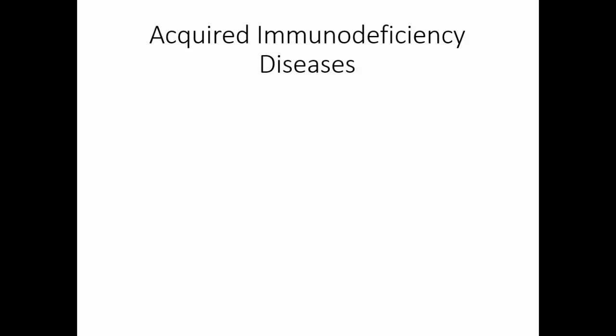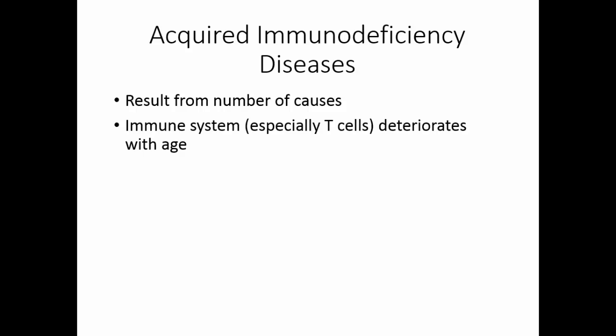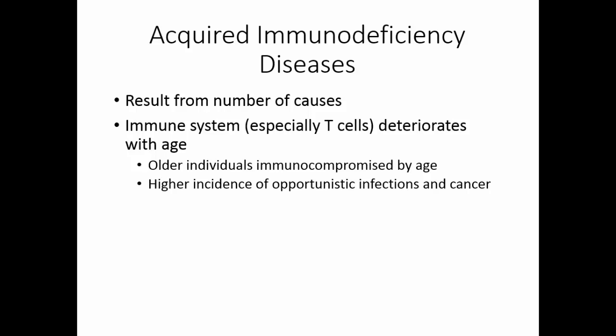The acquired immunodeficiency diseases can result from a number of causes. The immune system, especially the T cells, deteriorates with age. Older individuals are immunocompromised by age, with a higher incidence of opportunistic infections and cancer. Severe stress causes the secretion of corticosteroids, which suppress the immune system — so if you're making them yourself, you're still suppressing your immune system.